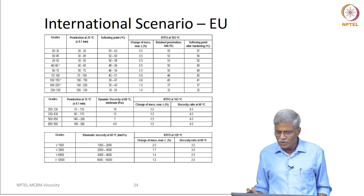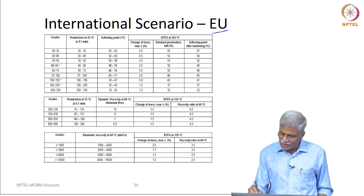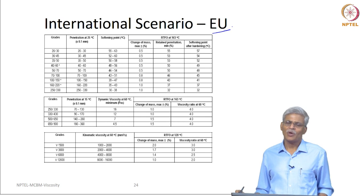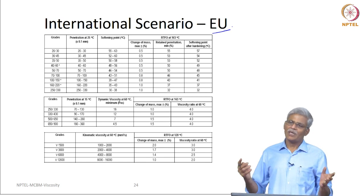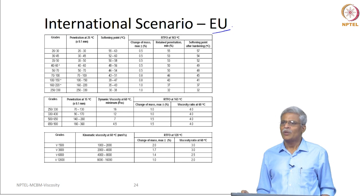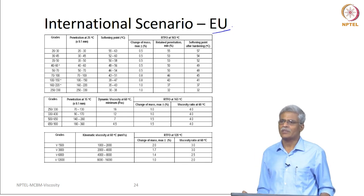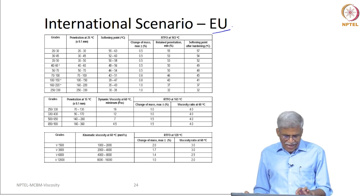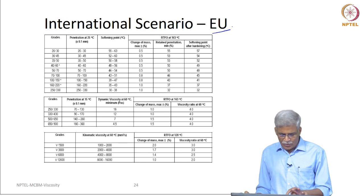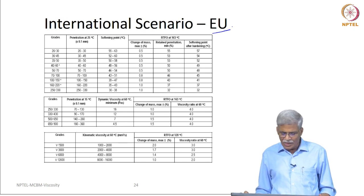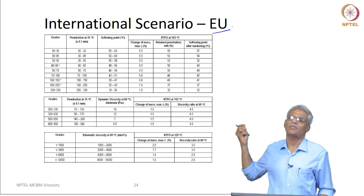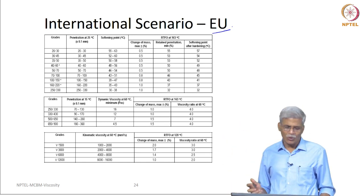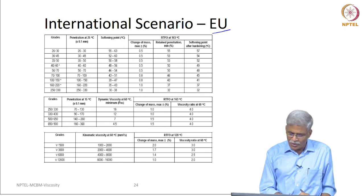The European international scenario is completely complicated. When the European Union was formed, there was a harmonization of specifications. Because of this, there are two sets of specifications: one set is compulsory, another set is voluntary. You could have a penetration-based specification or a viscosity-based specification, and depending on the different types of grades available, each country picks the compulsory and voluntary tests to be used.